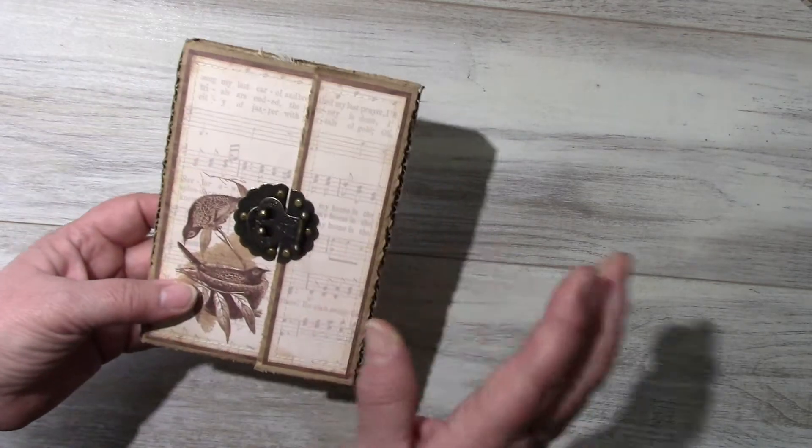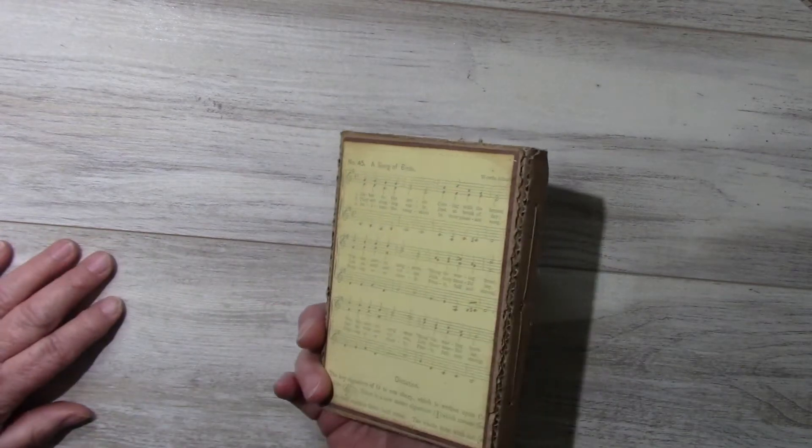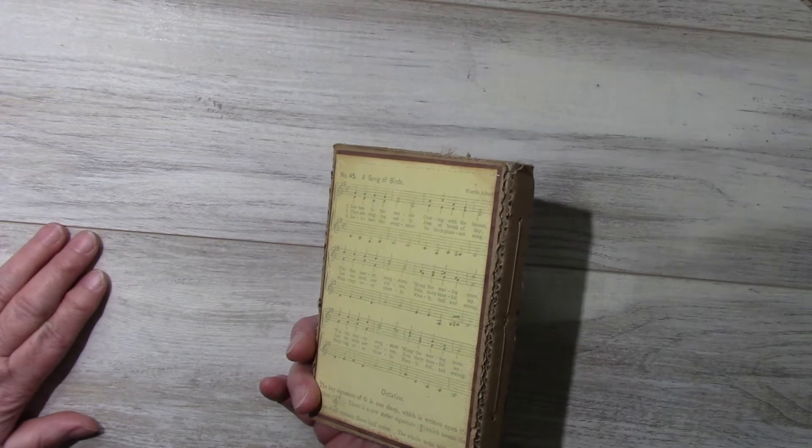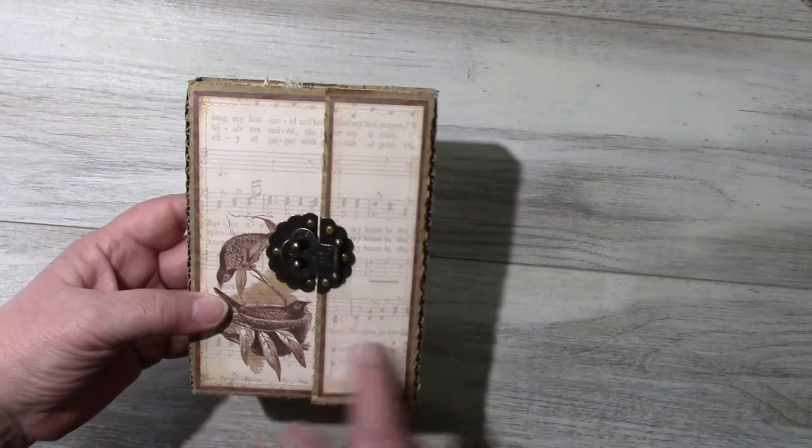The paper collection is a printable by Ephemera's Vintage Garden called The Secret Garden. This is from one of the pages, A Song of Birds, and same as this one.